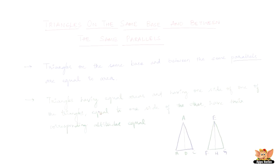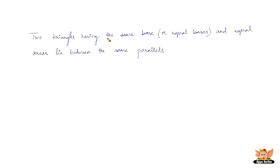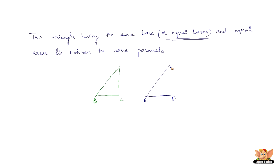Now let us go to the third property. Two triangles having the same base or equal bases and equal areas lie between the same parallel lines. Let me draw two triangles: one with base BC and another with equal base EF. Their areas are equal — so the areas of triangle EFG and triangle ABC are equal and they have equal bases. In this case, the triangles lie between the same parallel lines, meaning the line BC and EF are parallel to line AG.